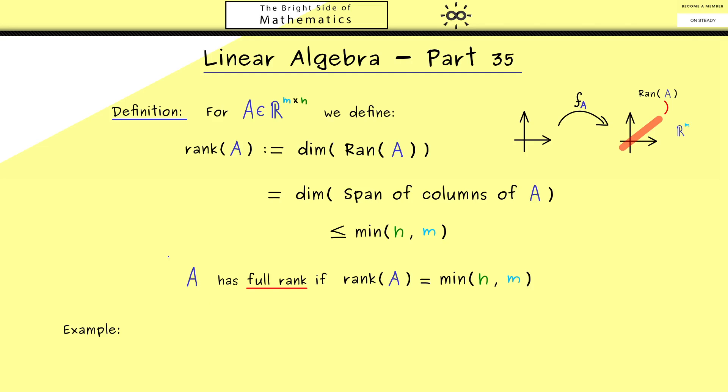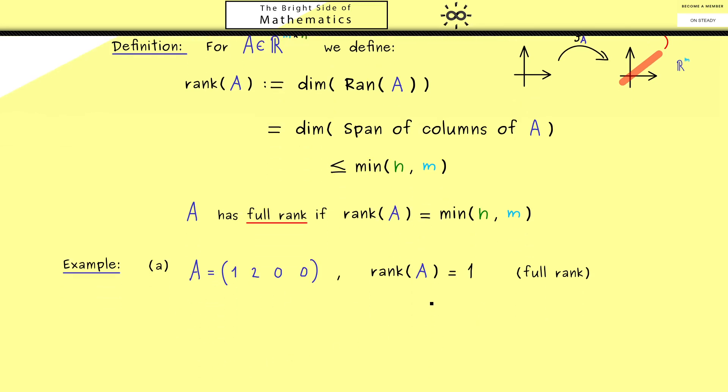Now before we continue with more definitions, let's first look at some examples here. Let's start with a very simple example. This here is a matrix with just one row, and we immediately see the rank is 1. Of course, the columns can only span a one-dimensional vector space here. Hence in this context, we can also state that this matrix has full rank.